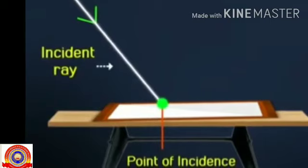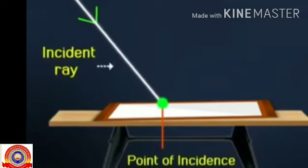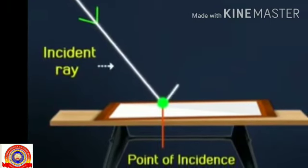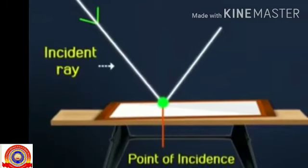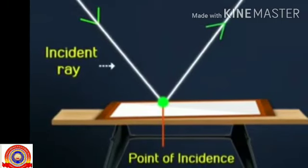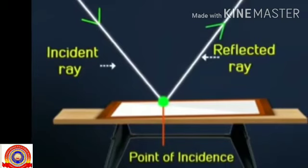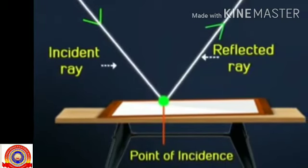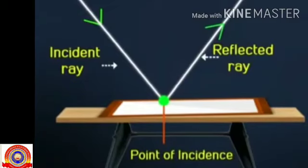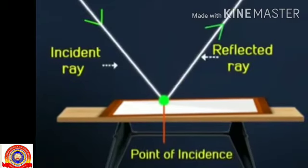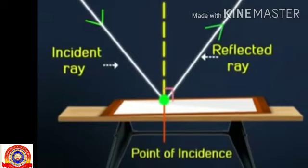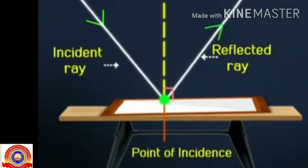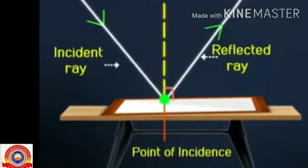From the point of incidence, the ray reflects or bounces back to the same medium, and that ray is the reflected ray. From the point of incidence we can draw a line perpendicular to the surface, and that line is the normal. The incident ray, reflected ray, and normal all lie on the same plane.